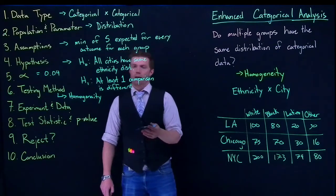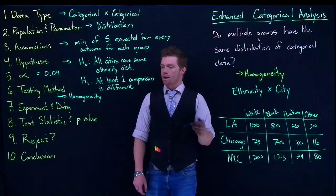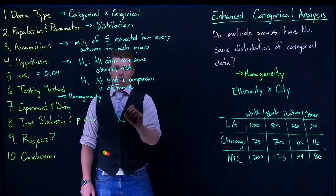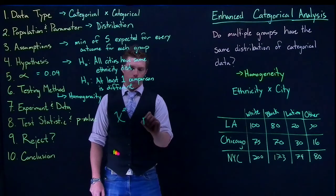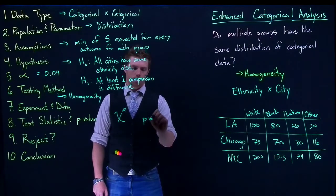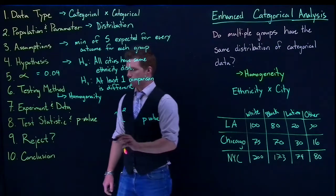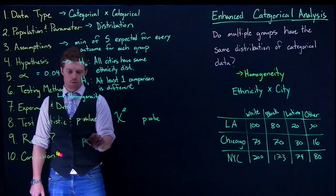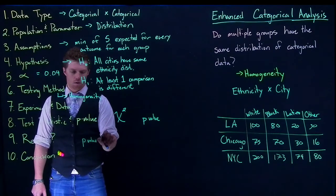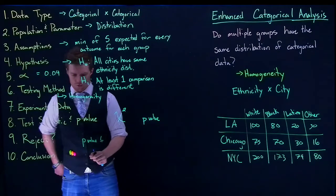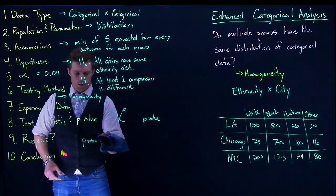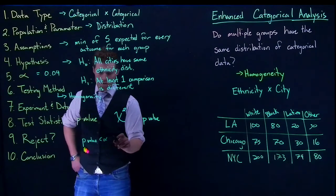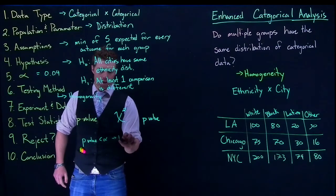Then we go and calculate our test statistic and p-value. We are going to be using the chi-squared test and will get a p-value. We reject the null hypothesis if the p-value is less than alpha.